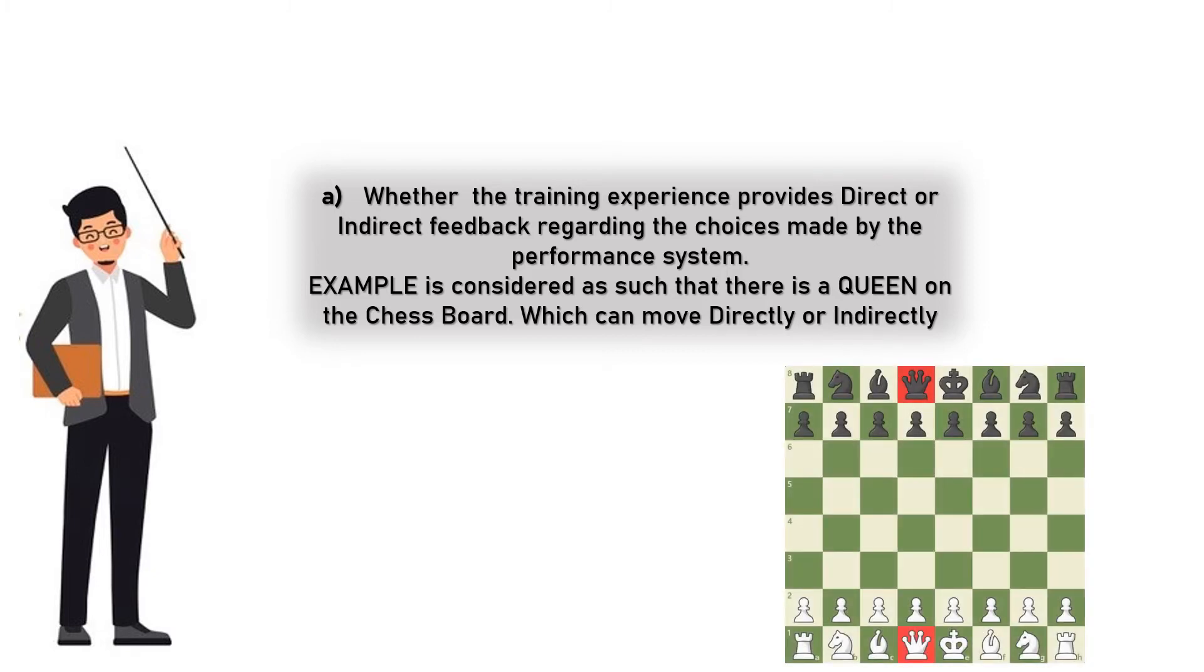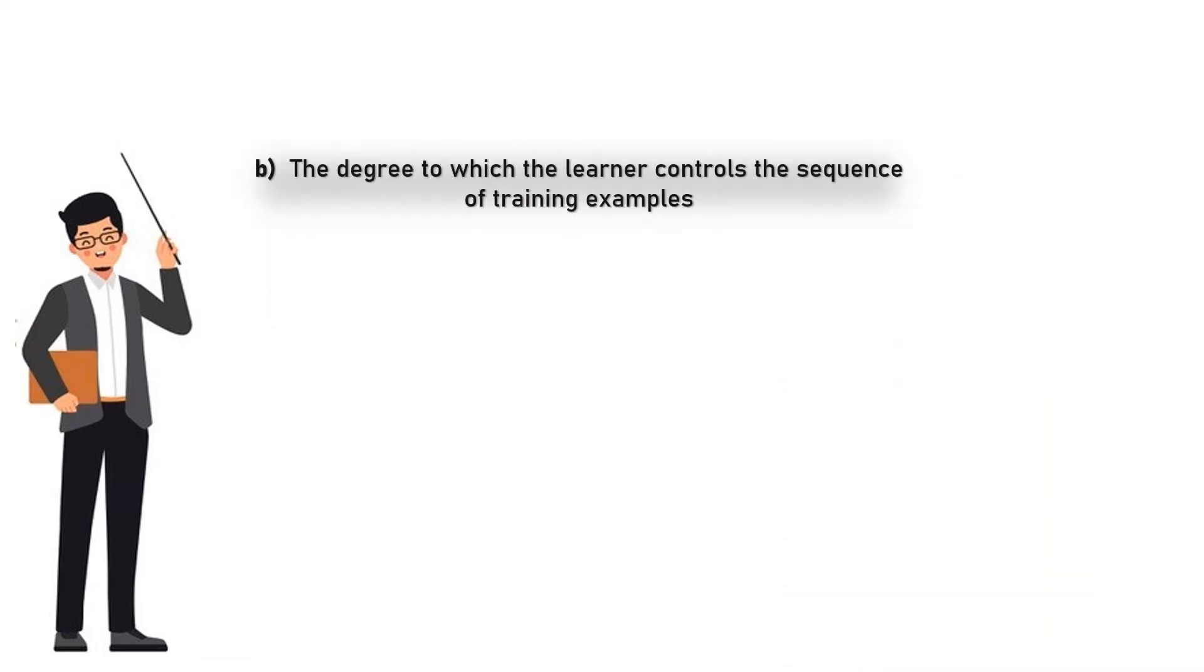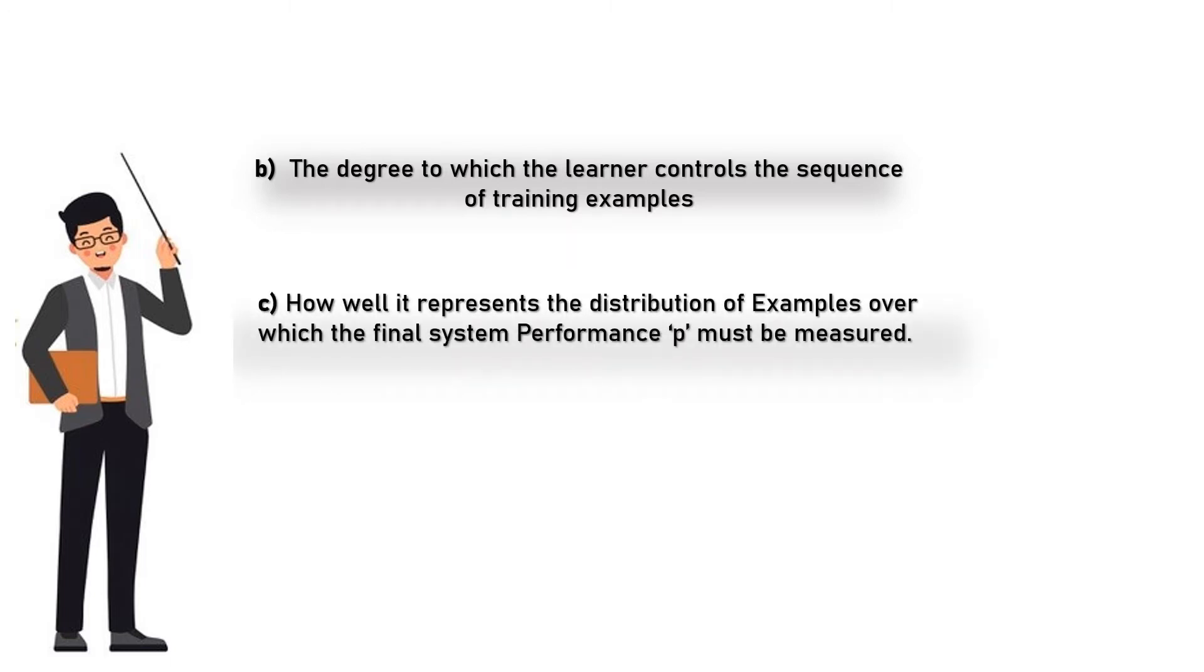A: whether the training experience provides direct or indirect feedback regarding the choices made by the performance system. Example is considered such that there is a queen on the chessboard which can move directly or indirectly. B: the degree to which the learner controls the sequence of training examples. C: how well it represents the distribution of examples over which the final system performance P must be measured.